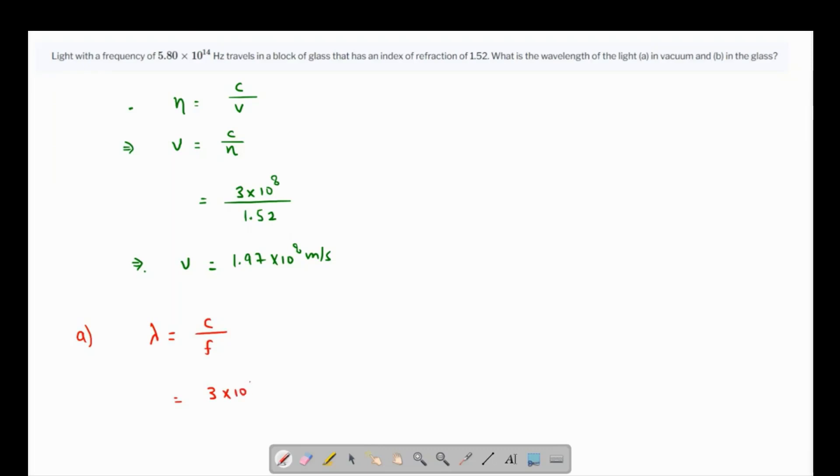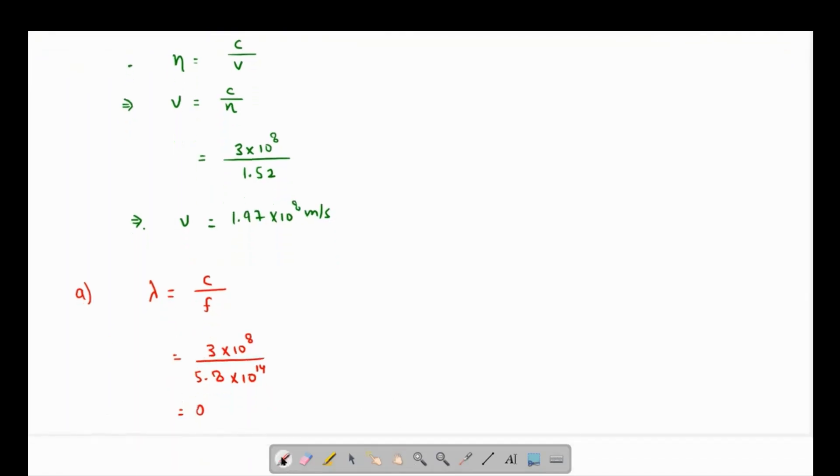Frequency is already given, so speed in vacuum is 3 times 10^8, and frequency is given as 5.8 times 10^14. So this comes out as 3 over 5.8. Let me try my calculator. That's coming as 0.517 times 10^-6 meters.